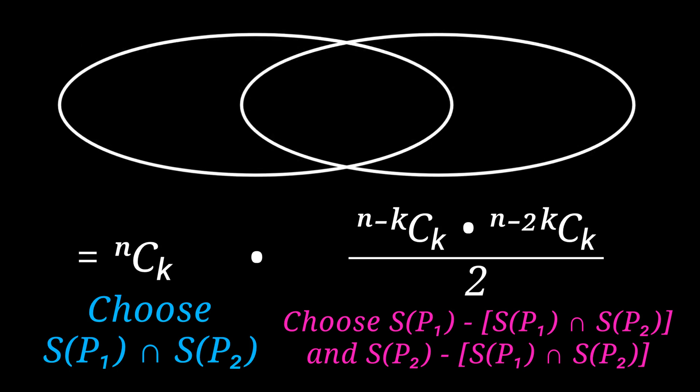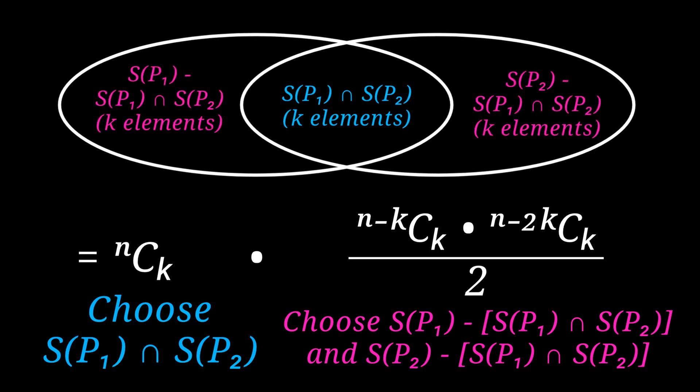If we look at the Venn diagram of S(p1) and S(p2), we can first select their intersection and then we can select the elements which go in the part which is not their intersection. The division by 2 is simply because we don't want to interchange p1 and p2 and call that a new equilateral triangle.